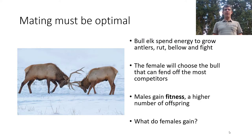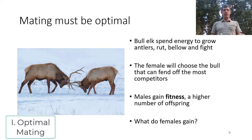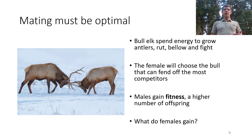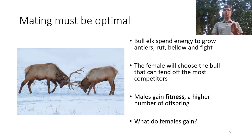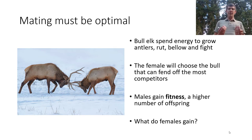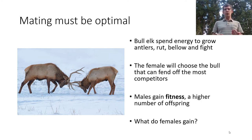Mating must be optional. These bull elk are spending energy to grow antlers, rut, bellow, and fight — using resources that could be used for other things — and making themselves more obvious to predators. If you remember the allocation model, we have to ask why energy is spent here. Many females will ultimately choose the same bull — the one that fends off the most competitors. Males gain fitness through these activities, where fitness is the relative genetic contribution to the next generation.